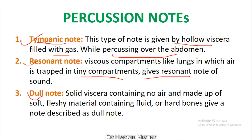Whenever you percuss over the right intercostal spaces you will find the resonant note, which is present over the lung. The dull note is produced by solid viscera containing no air, made up of soft fleshy material, containing fluid, or hard bones.